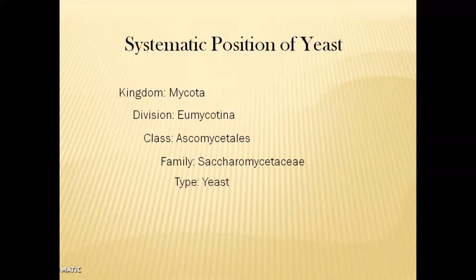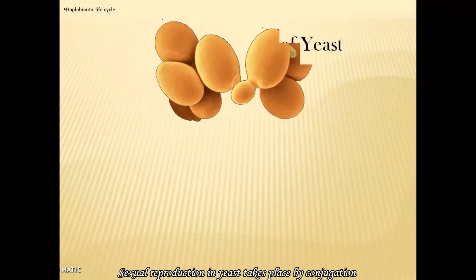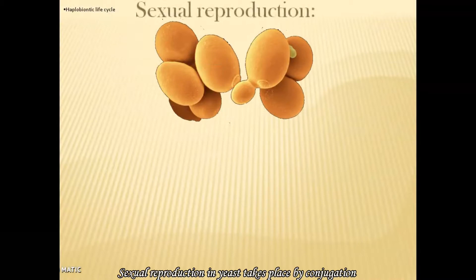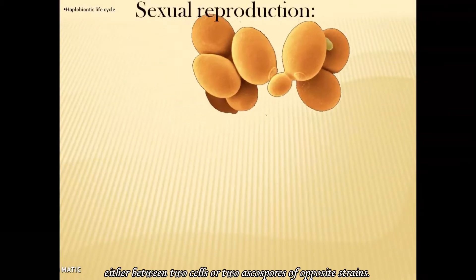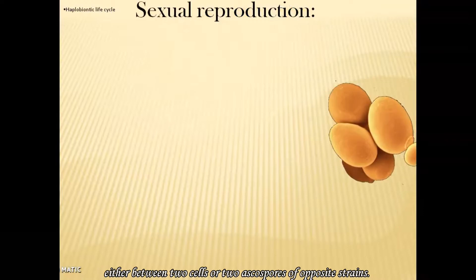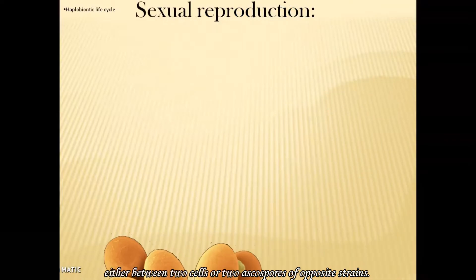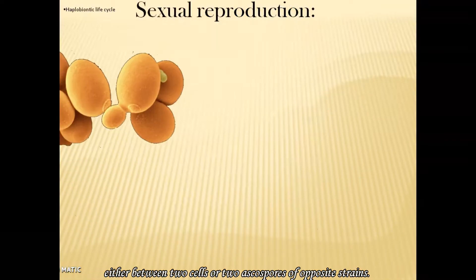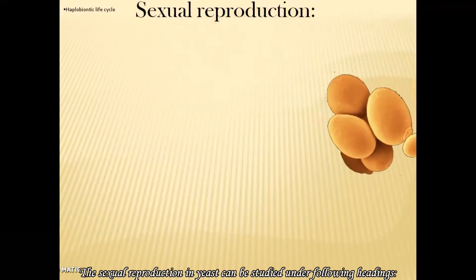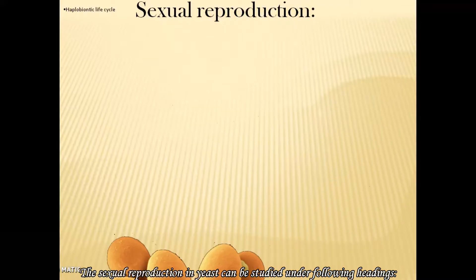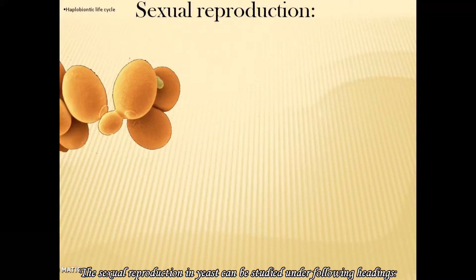Sexual reproduction in yeast takes place by conjugation, either between two cells or two ascospores of opposite strains. The sexual reproduction in yeast can be studied under the following headings.